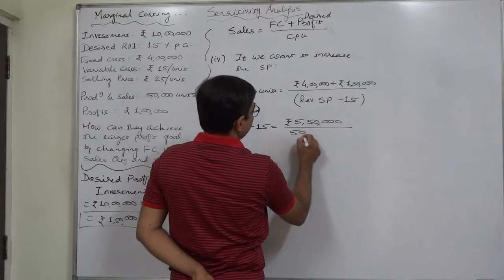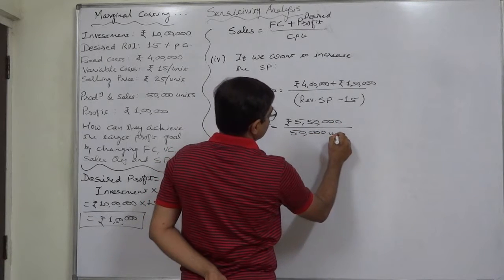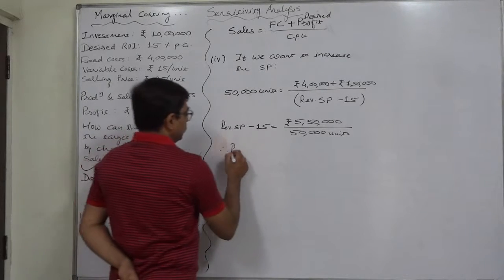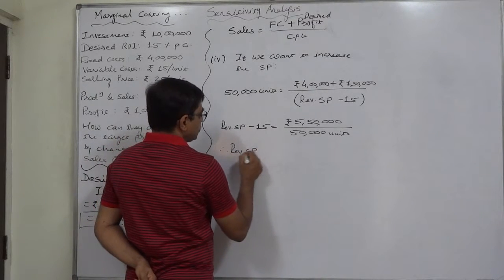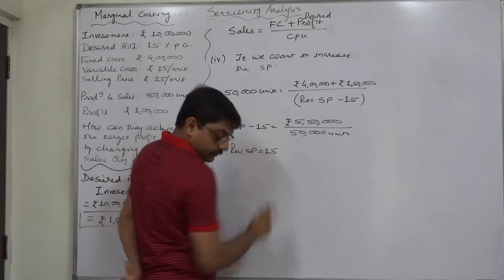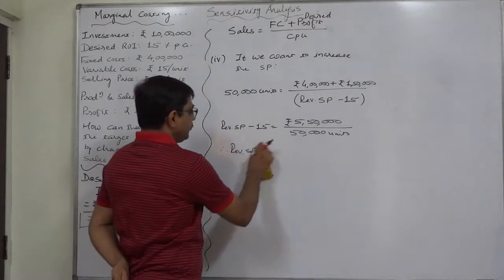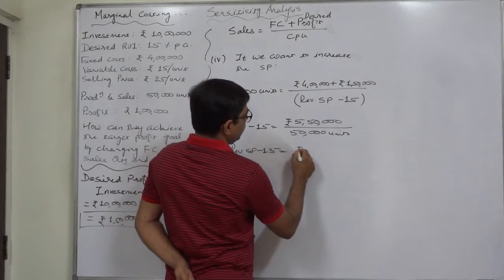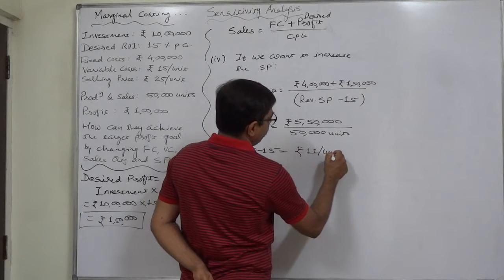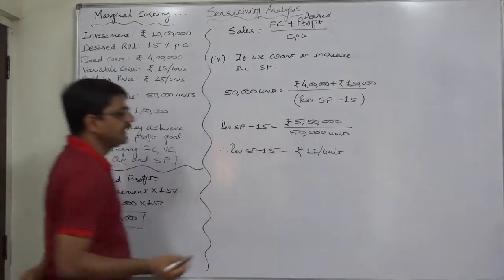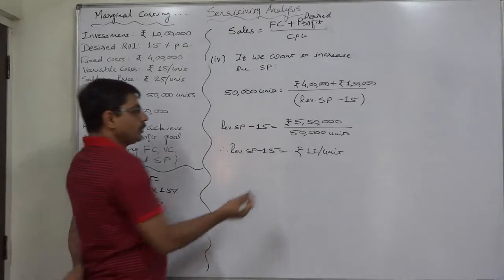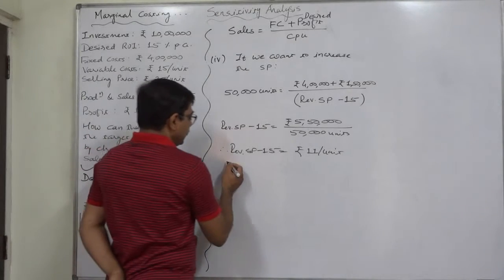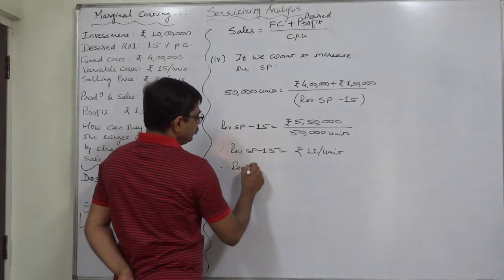Dividing rupees 5 lakh 50,000 by 50,000 units, the equation becomes: revised selling price minus existing variable cost of rupees 15 equals rupees 11 per unit. So the revised contribution will now be rupees 11 per unit. To achieve this revised contribution of rupees 11 per unit, we need to find the new selling price.